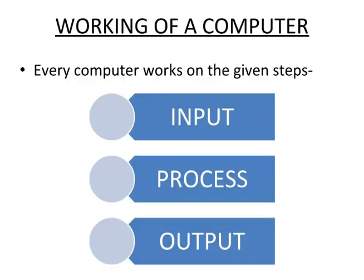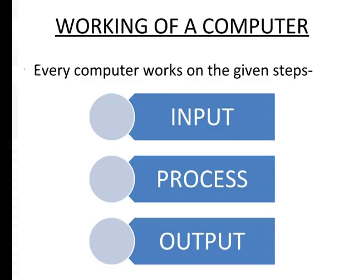Now the working of a computer. A computer works on three steps: Input, Process, and Output. Input is the instructions that we give to the computer. Process is when the computer starts working on those instructions. Output is what we get as a result after processing.